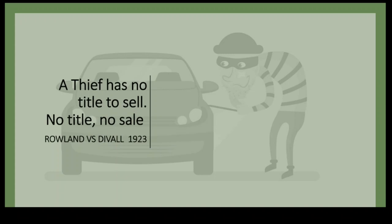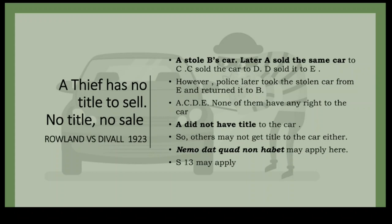Remember: a thief has no title to sell. Here's the story: A steals B's car and gives it to C, then from C to D to E — the car passes on. One day the police find the car in the hands of E and hand it over to B. What about C, D, and E who were honest buyers? When they bought the car they did not know it was stolen — but do they have any right? No.